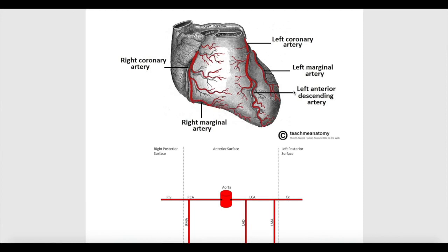As we know, all of our bodies are composed of cells, and the heart is no exception. The heart is composed of cells lining the heart from the inside, called the endocardium, and muscle cells in the myocardium, which is the middle layer of the wall of the heart. All of these cells need blood supply, nutrients, and oxygen, so we need some arteries to supply these cells and some veins to drain wastes and carbon dioxide from them.